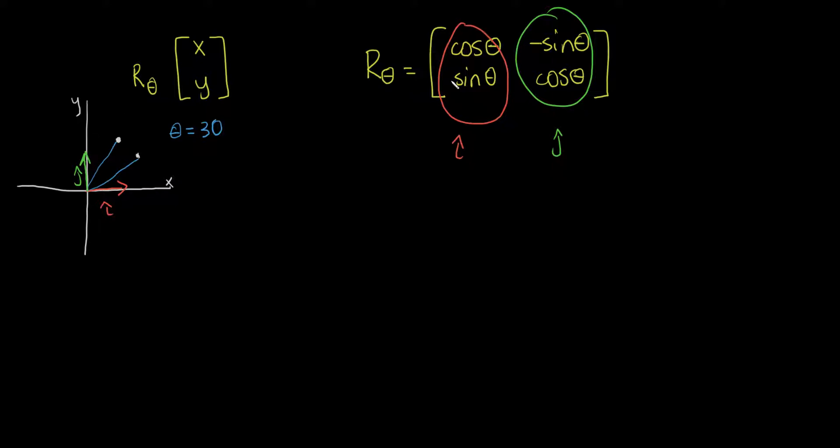So we have to ask the question, what do these new points that R theta is telling i hat and j hat to go to, what do these represent?